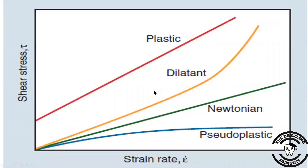Now let us summarize all the types of fluid behaviors through this graph. For Newtonian fluids, whatever the stress, they have constant viscosity. In pseudoplastic liquids, there is a decrease in viscosity with an increase in shear stress. In dilatant liquids, there is an increase in viscosity with an increase in shear stress. In plastic liquids, a certain initial yield strength is required to make them flow.